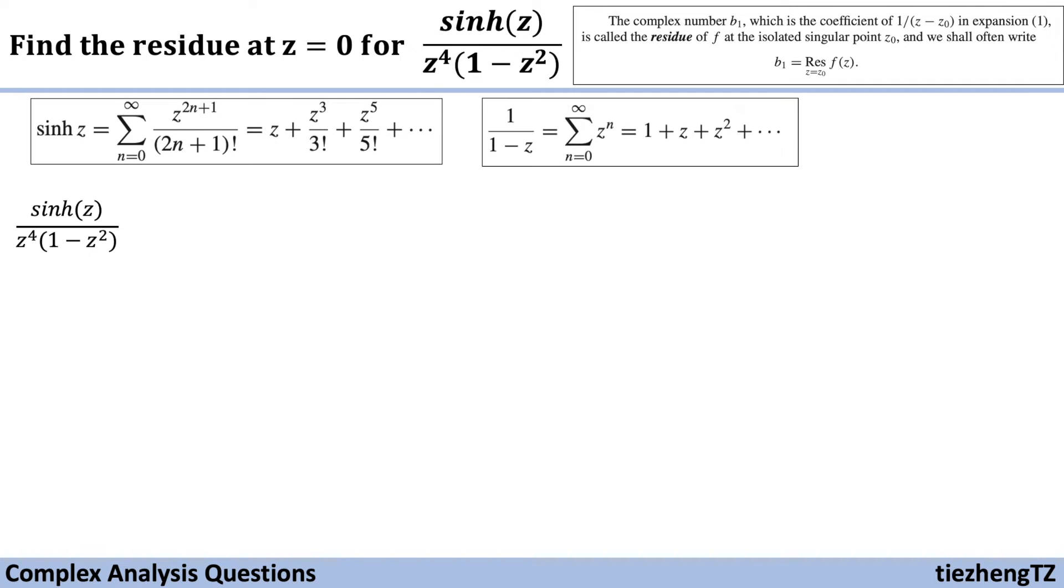We know the expansion forms for sinh(z) and 1 over 1 minus z. In our example question, we have sinh(z) and we also have 1 over 1 minus z squared. So we just need to be careful when we substitute these two expansion forms into our function.